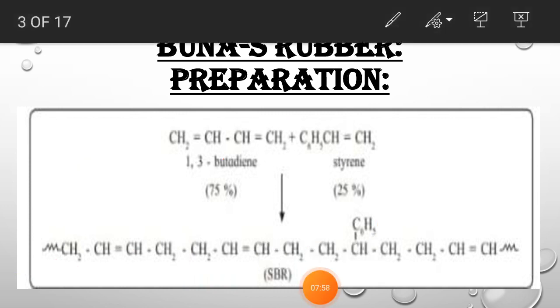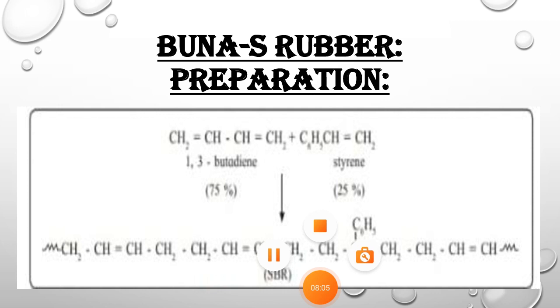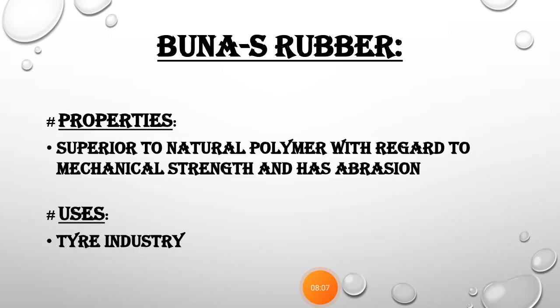So here we have prepared Buna S rubber from 1,3-butadiene and styrene. Its properties: it is superior to natural rubber with regard to mechanical strength and has abrasion resistance. So its use is in the tire industry. These are the properties and uses of Buna S rubber.